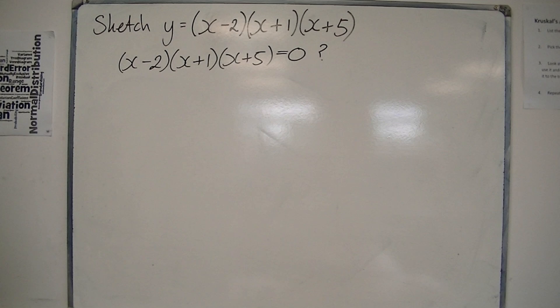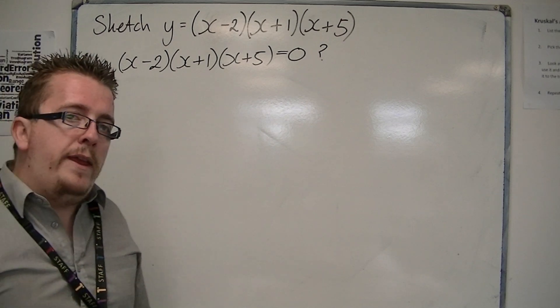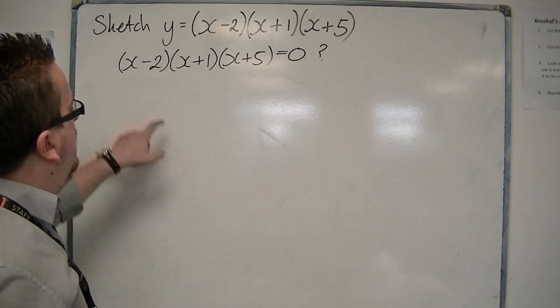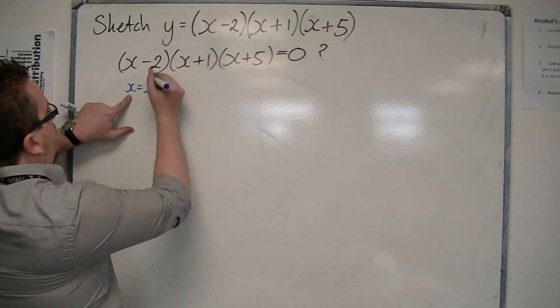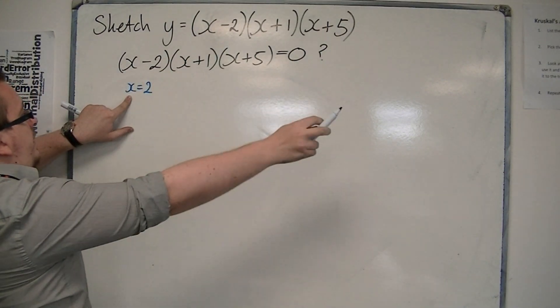Now, this whole thing is going to be zero at three specific points. It could be zero when x is two, because if that bracket is zero, the whole thing is zero.